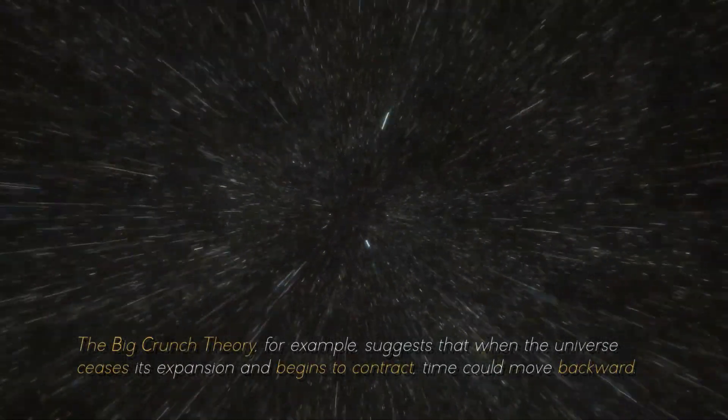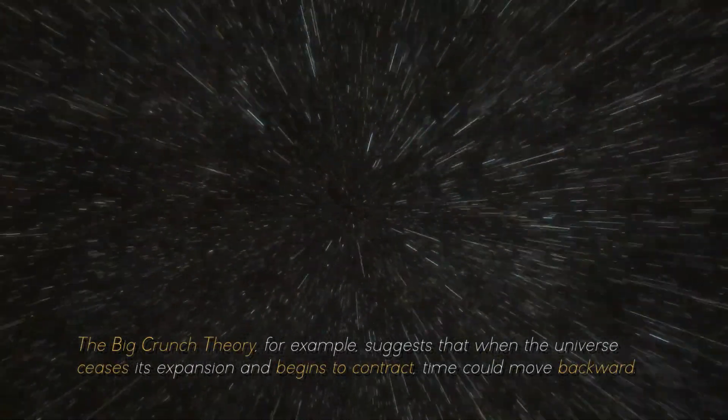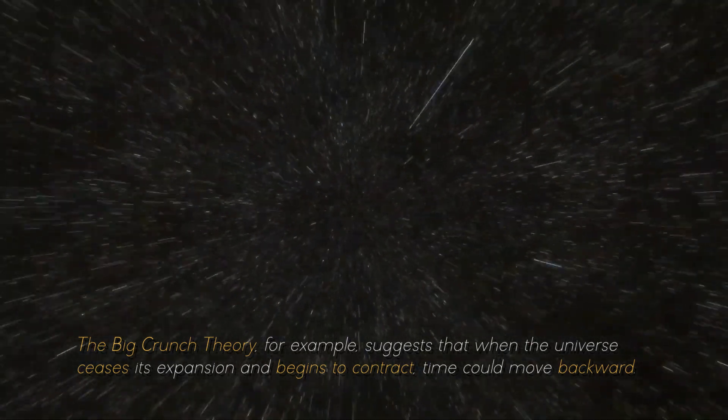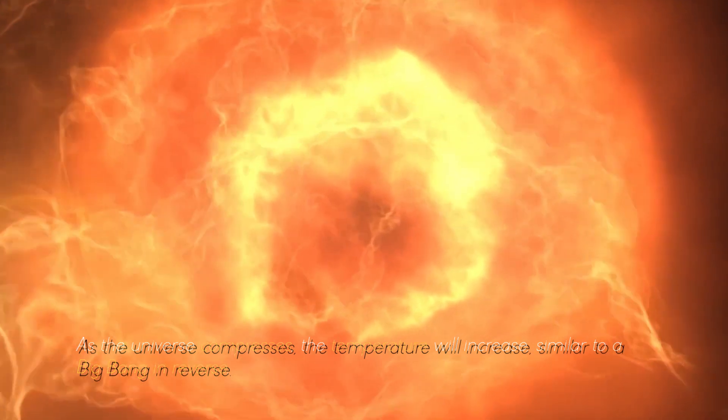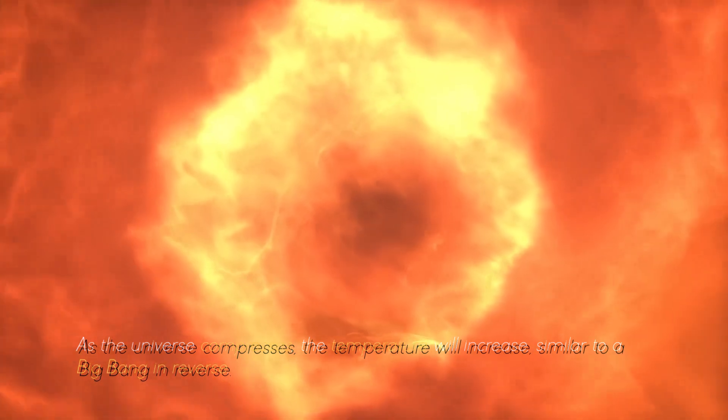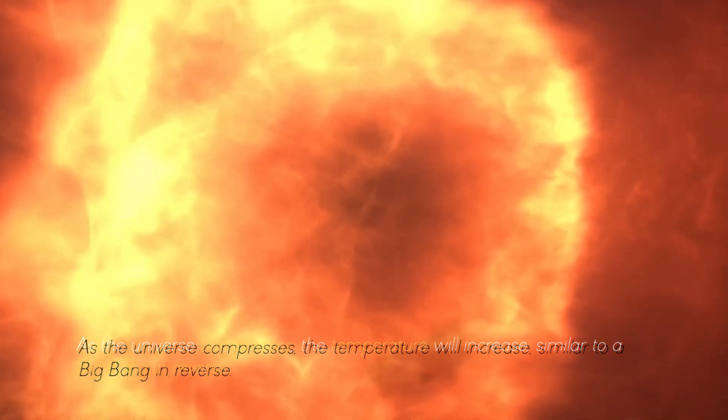The Big Crunch theory, for example, suggests that when the universe ceases its expansion and begins to contract, time could move backward. As the universe compresses, the temperature will increase, similar to a Big Bang in reverse.